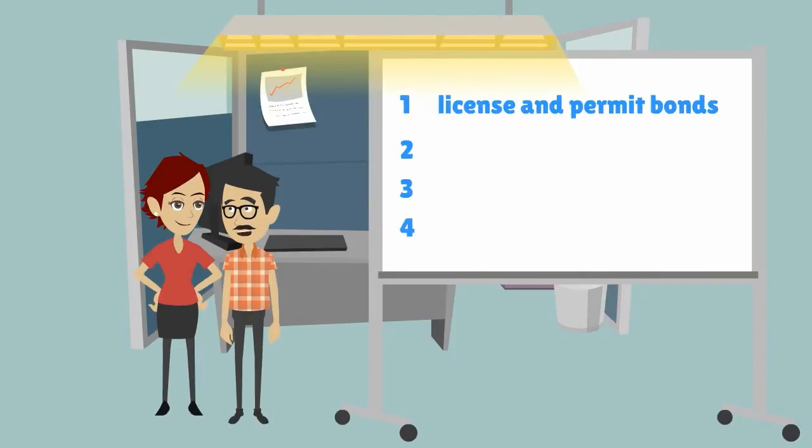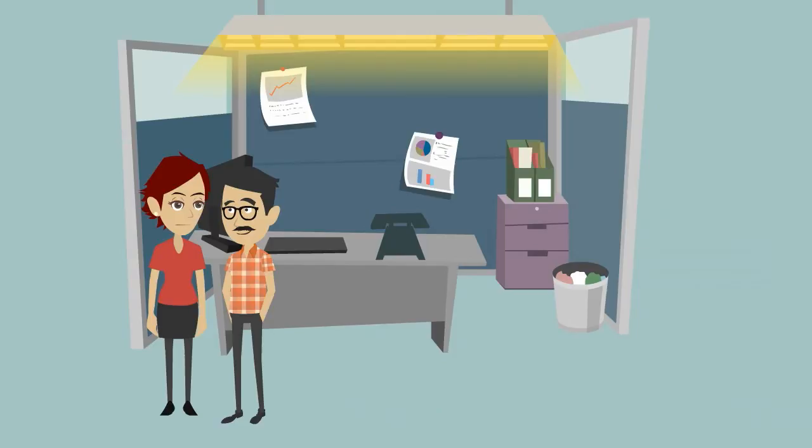There are four main types of surety bonds: license and permit bonds, contract bonds, court bonds, and fidelity bonds. I understand, but aren't they all the same?